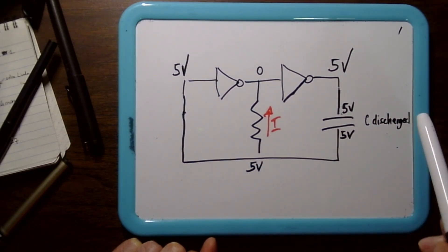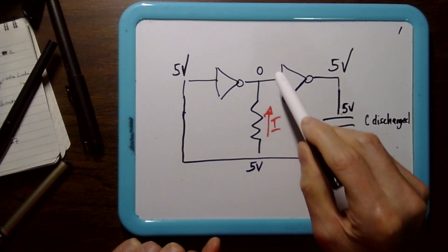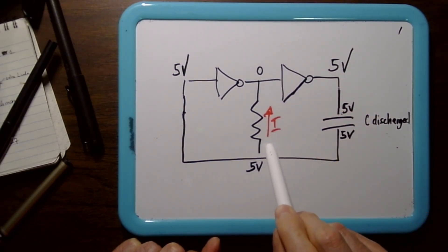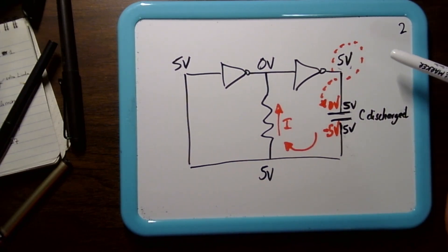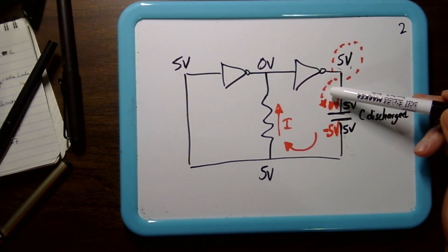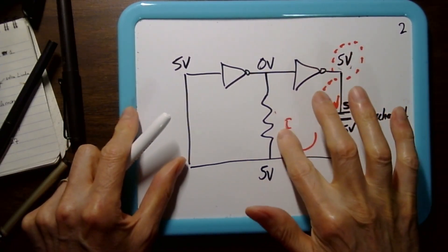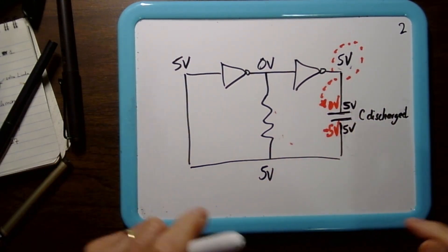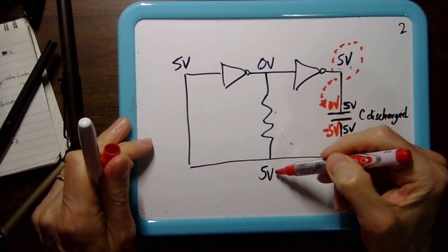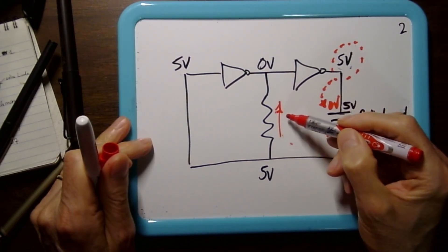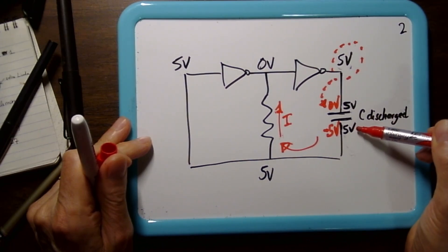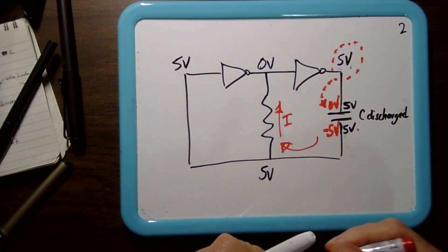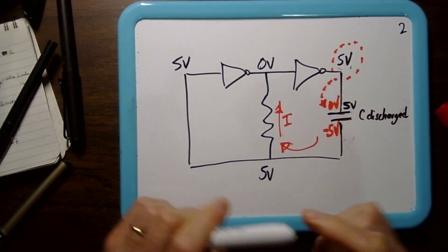What's going to happen is that the capacitor is going to start charging, because here you have 5 volts and here you have 0 volts. This is going to induce a current going this way. Because of that difference of potential, you have some current that's going to show up in that resistor. And because of that, the bottom plate of the capacitor is going to go down in voltage — from 5 volts down to 0 volts.